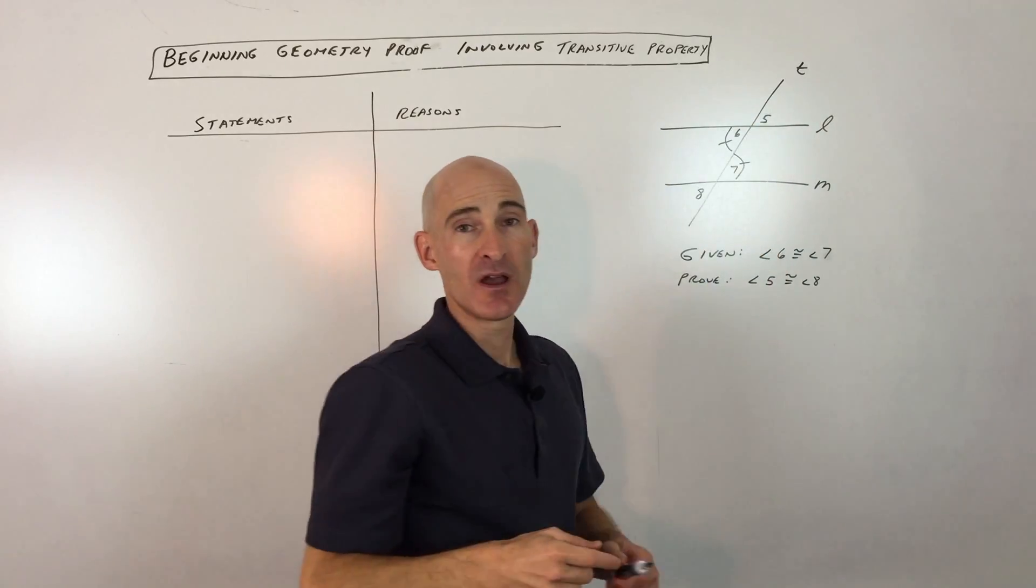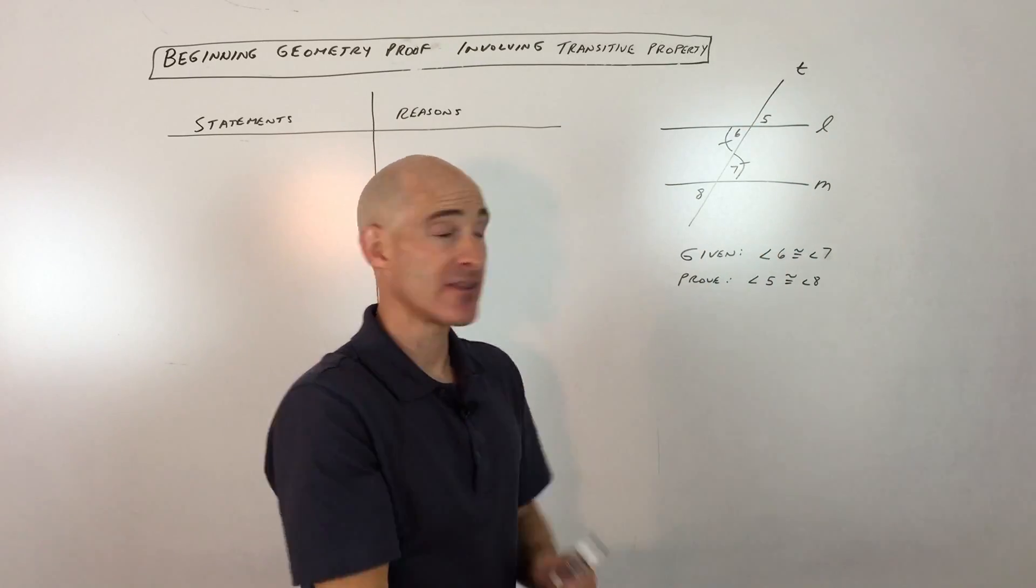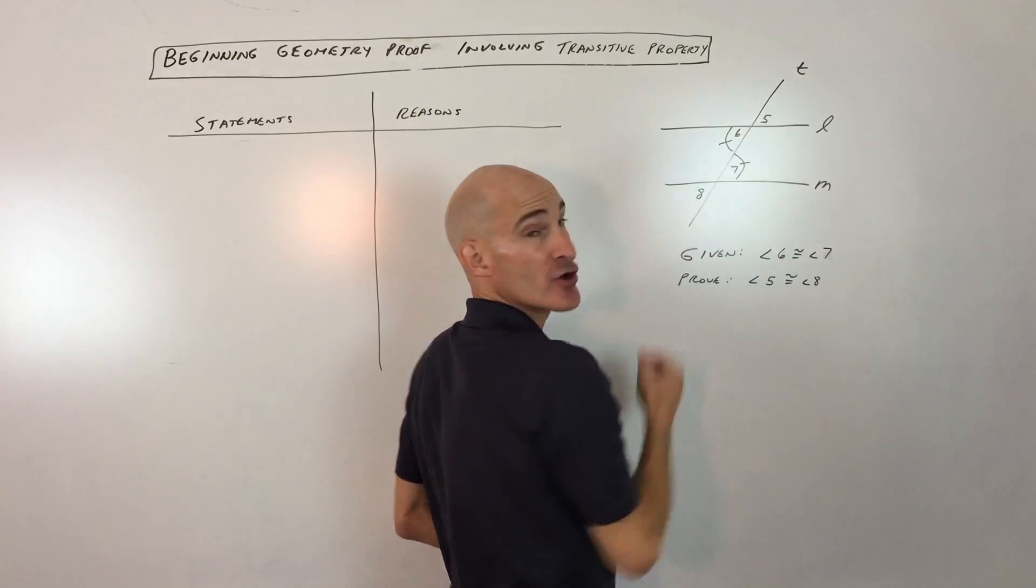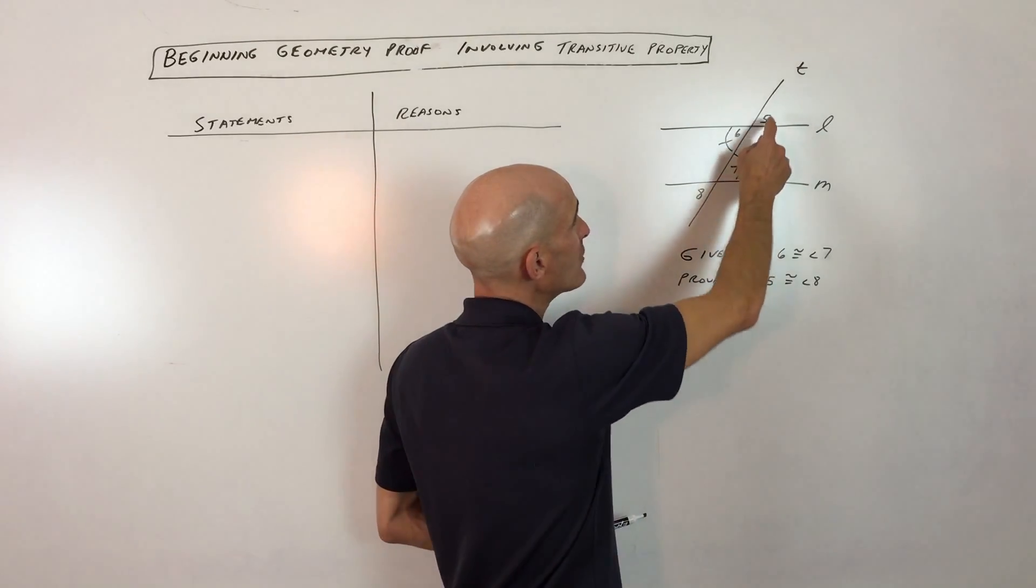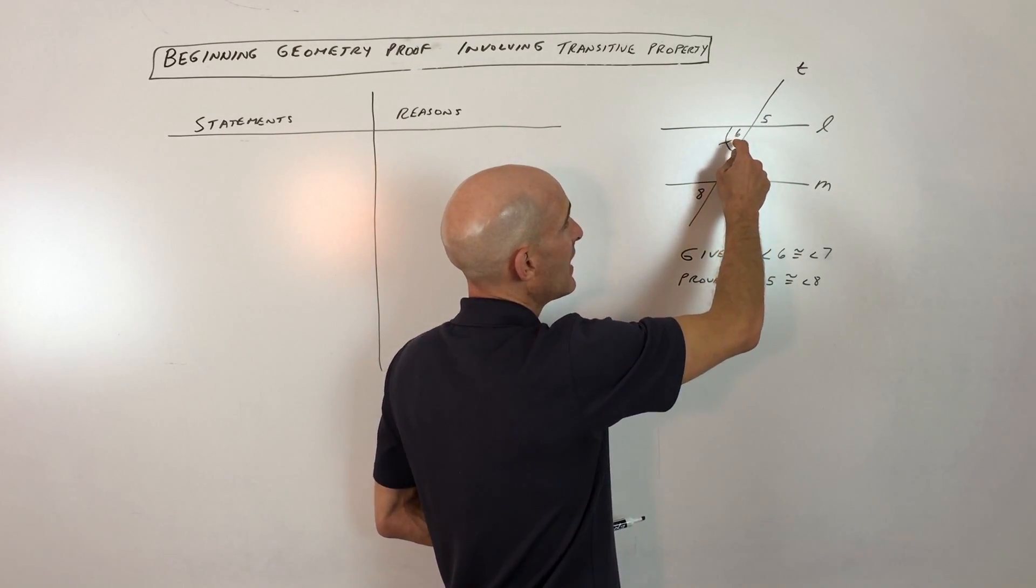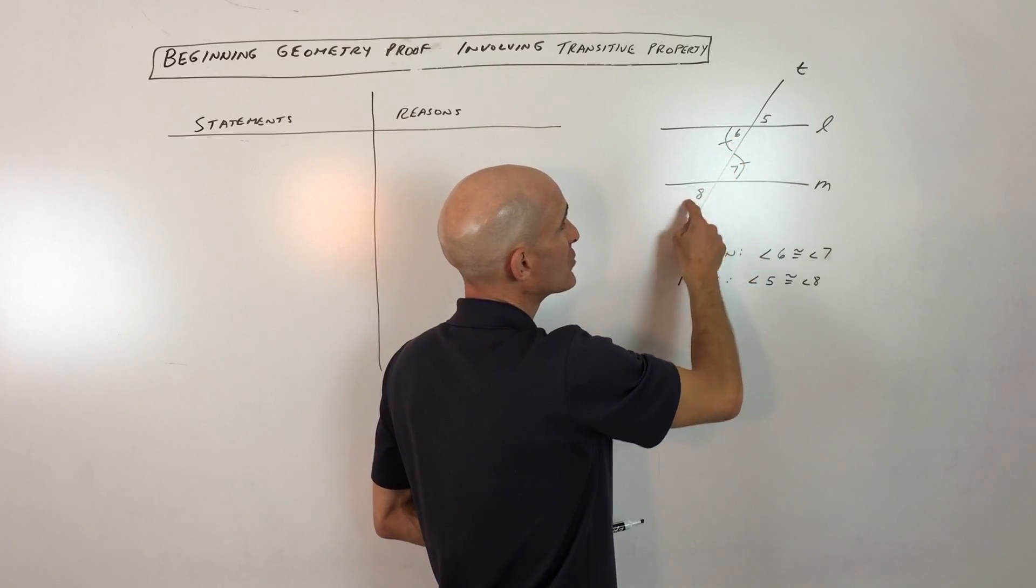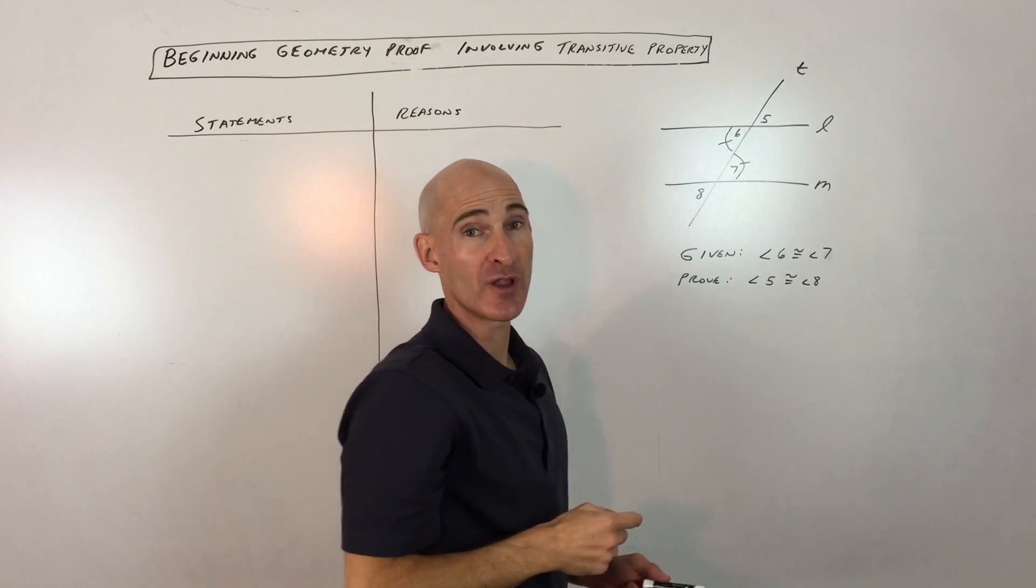So the angles that are across from each other when two lines intersect like that, those are called vertical angles and they're congruent to each other. So we know that 5 is congruent to 6 and then we also know that 7 is congruent to 8 because those are vertical angles.